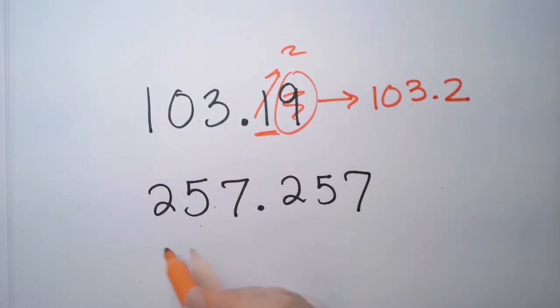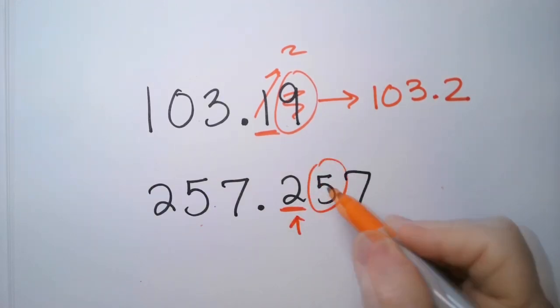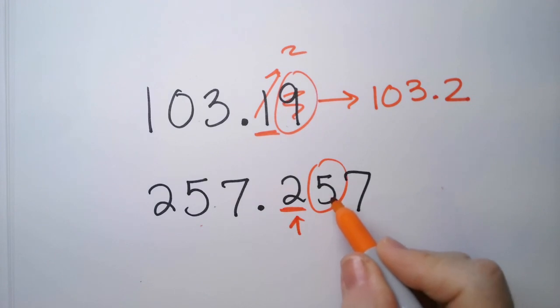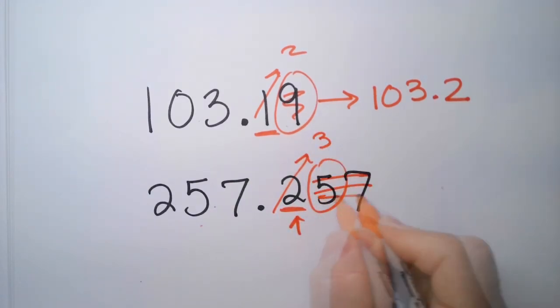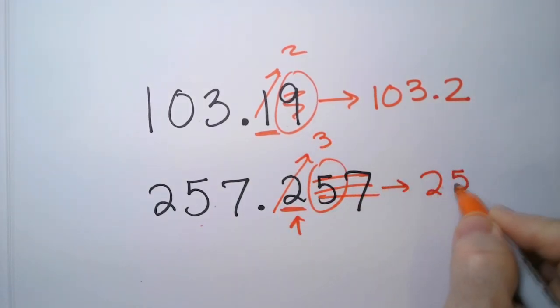Let's round this one to the nearest tenth. Here's the tenth. We peek next door, and we see, oh, you know what? There's a 5 there. That tells us it's 5 and above, so we still get rid of the rest, but this bumps up to a 3. So this is 257.3.